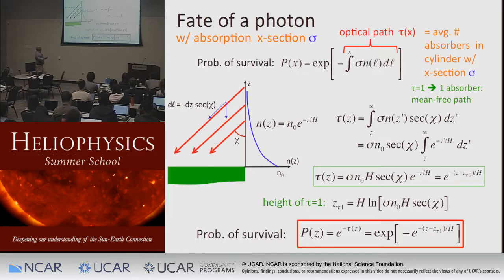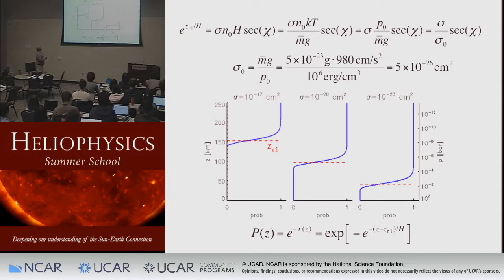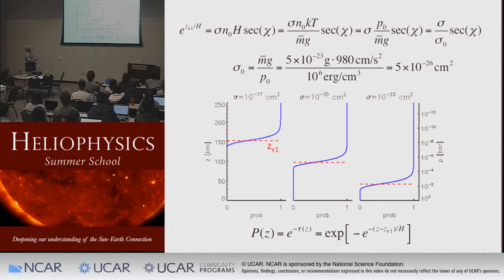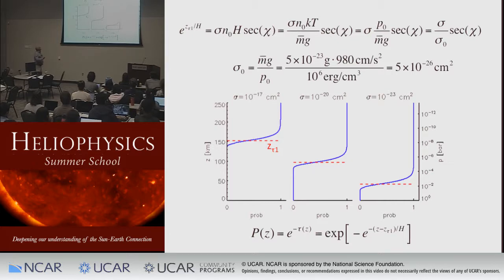That gives us the probability of survival of our photons. Here's a plot of this probability for different cross sections: 10⁻¹⁷ cm², 10⁻²⁰ cm², 10⁻²³ cm². You can see it just cuts off like a knife — if you have the big cross section, you ain't making it past 150 kilometers. At 140 kilometers, almost nothing. This is a really fast fall-off for the probability of survival — the exponential of an exponential.